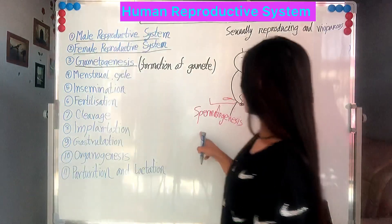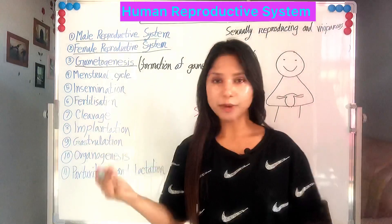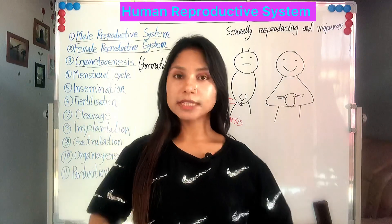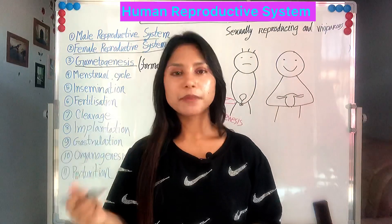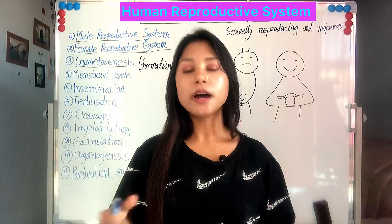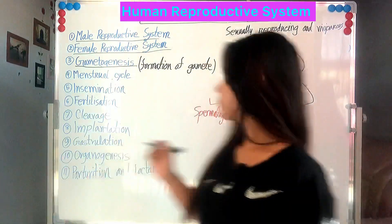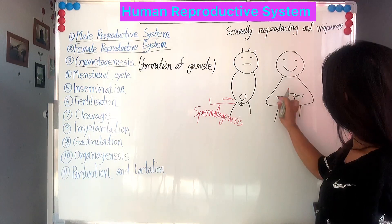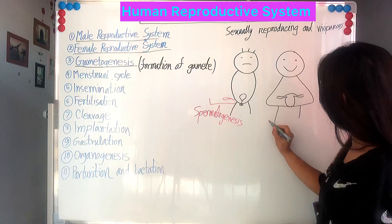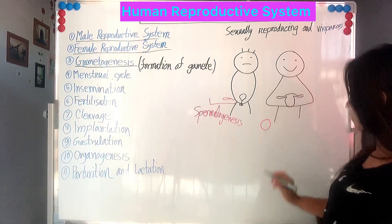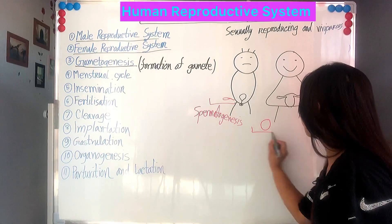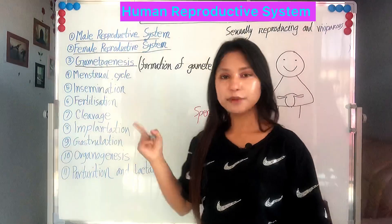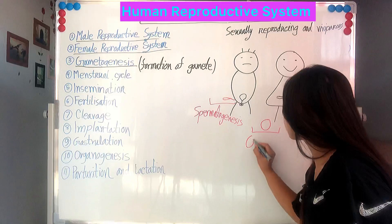The female gamete is egg cell, or ovum. If gametogenesis occurs in a female, that is called oogenesis — formation of ovum.